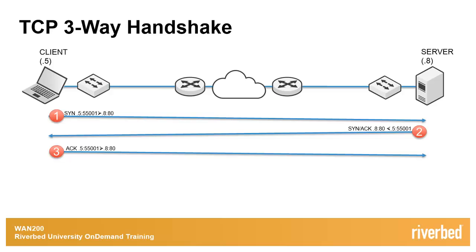In this diagram, we see a pair of hosts, each with their unique IP address. To simplify the discussion, only their last IP address octet will be used.